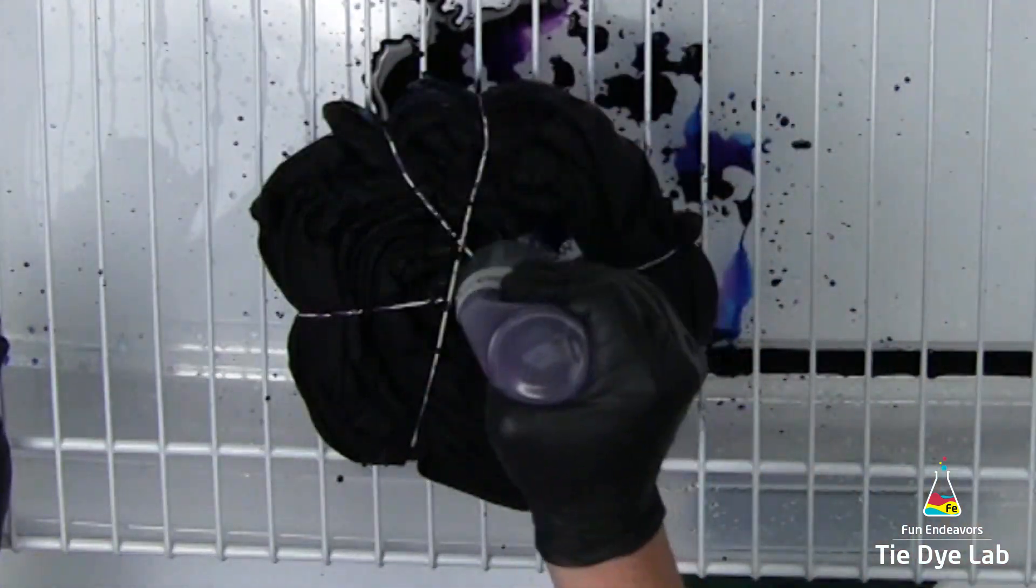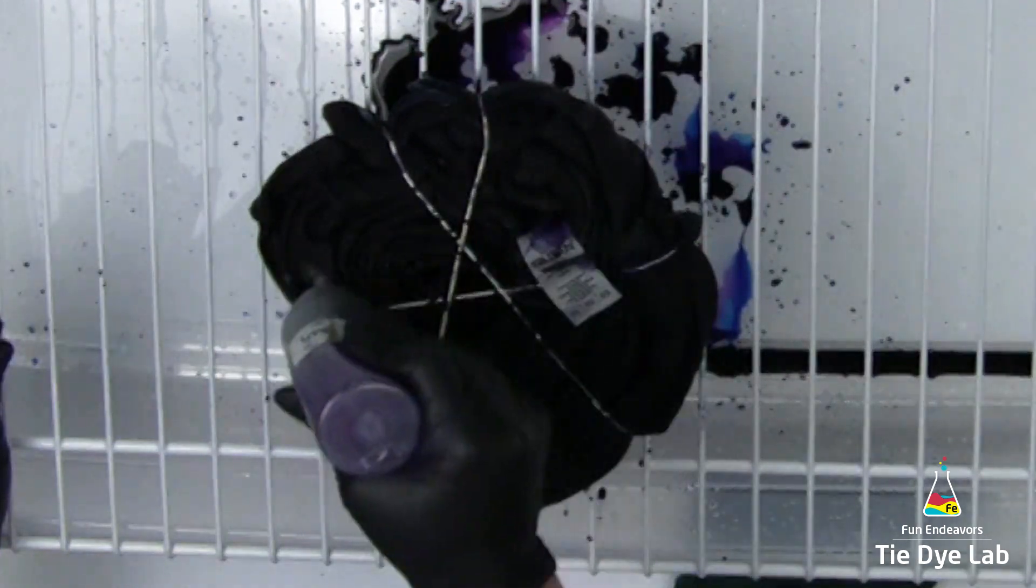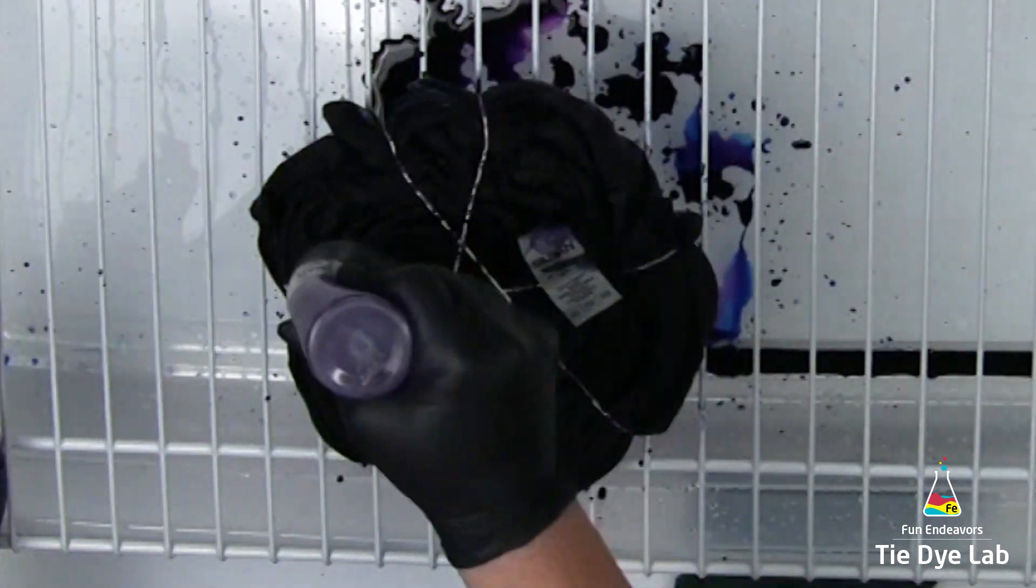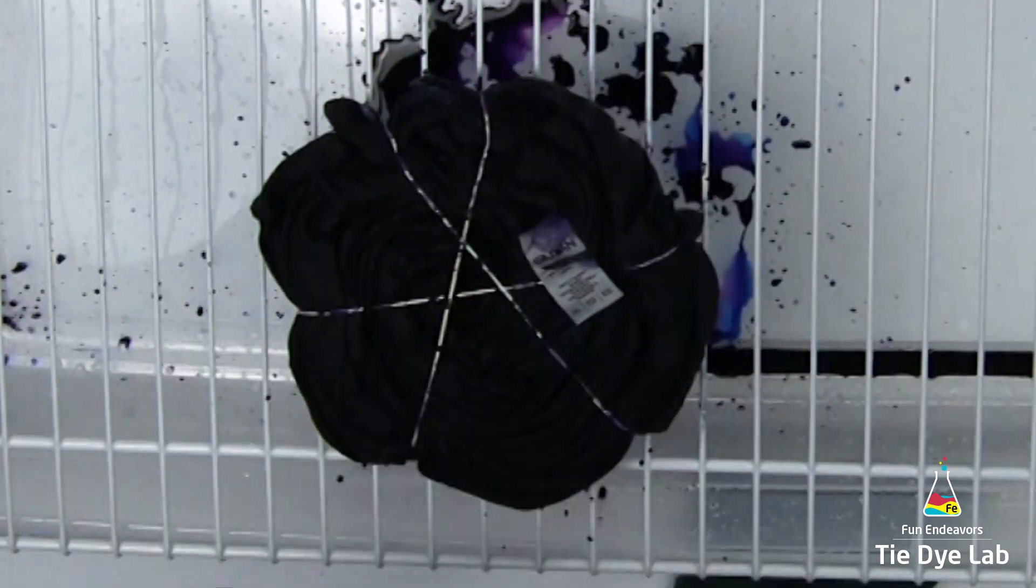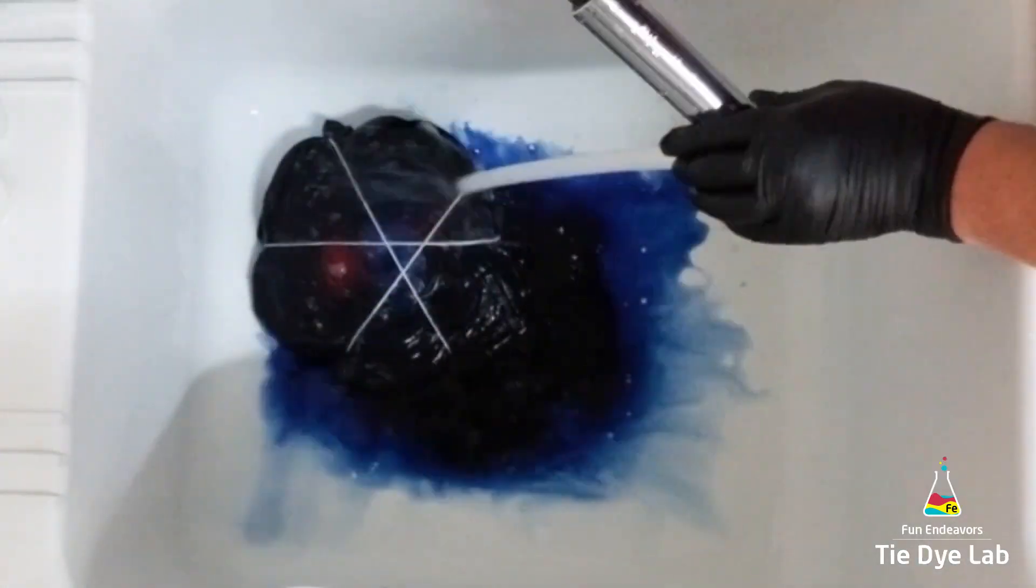I put the shirt aside and I allowed it to process for at least 24 to 36 hours. Then I took it to my utility sink and I began to rinse my shirt in cold water. I rinse in cold to get out any additional soda ash that was left in the shirt.